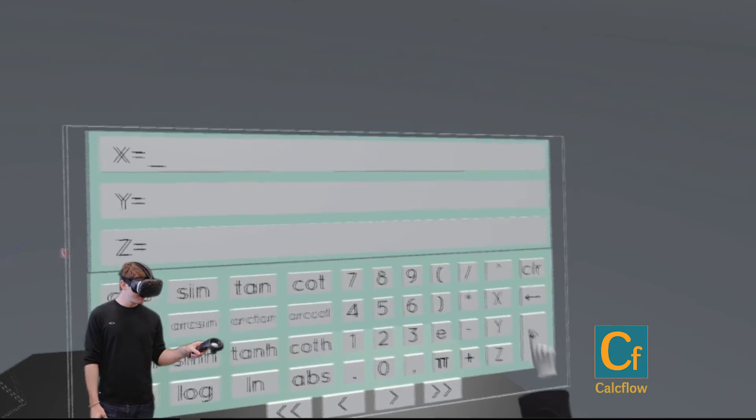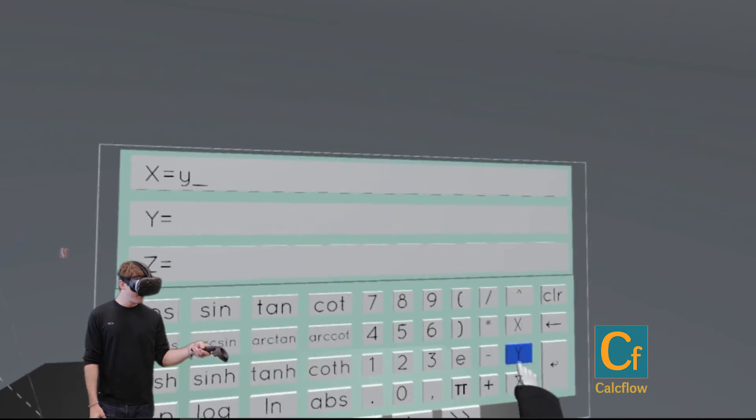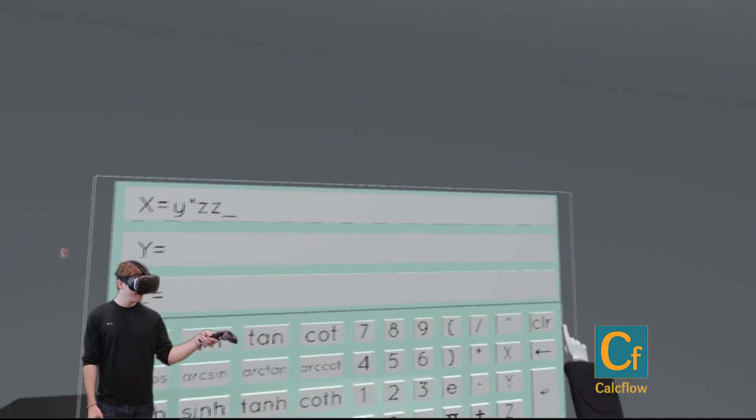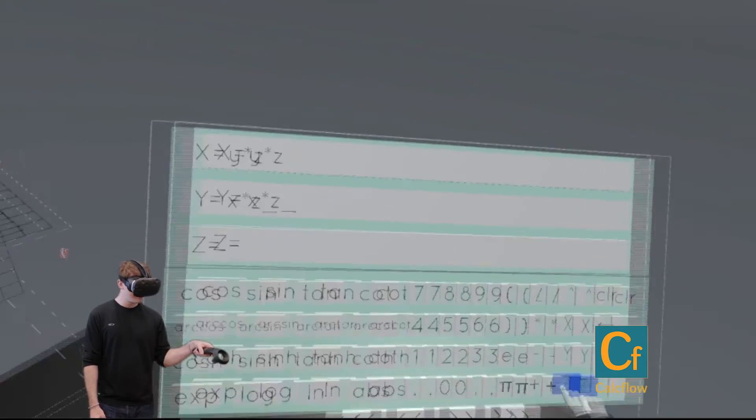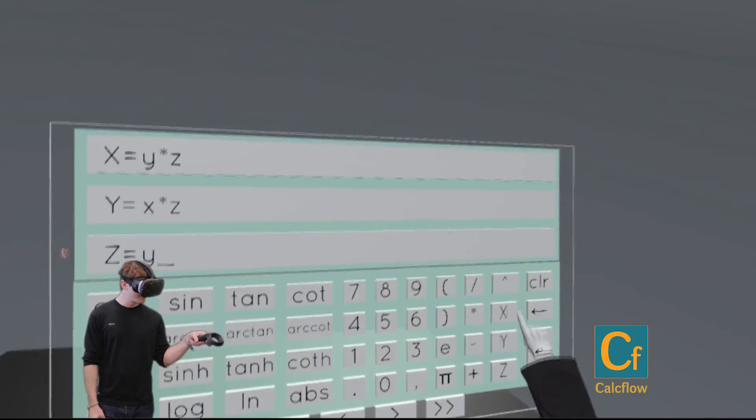Let's say x is equal to y times z, y is equal to x times z, and z equals y times x.